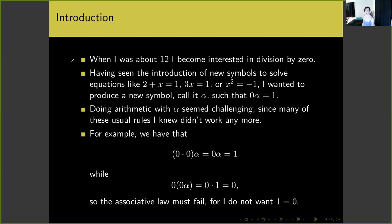To begin with, when I was about 12, I became interested in division by zero. It was the noughties, and it was a popular thing in the culture to joke about division by zero and what would happen if one were to divide by zero — presumably it would create a black hole or destroy the universe. So having seen the introduction of new symbols to solve equations like two plus x equals one, three times x equals one, or x squared equals minus one, I wanted to produce a new symbol, call it alpha, so that zero times alpha was equal to one, analogous to how I had previously seen negative numbers, rational numbers, and imaginary numbers.